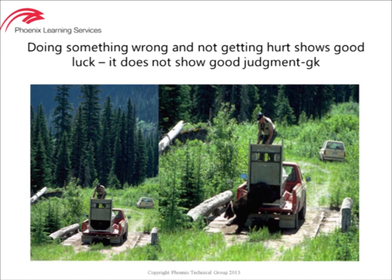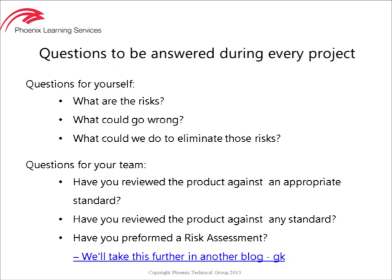It could have been a whole lot worse, but it could also have been avoided. Doing something wrong and not getting hurt shows good luck — it does not show good judgement. During the design and review processes, here are some questions to ask yourself: What are the risks? What could go wrong? And how could we eliminate those risks? Questions to ask your team: Have you reviewed the product against an appropriate standard? Have you reviewed the product against any standard? Have you performed a risk assessment?